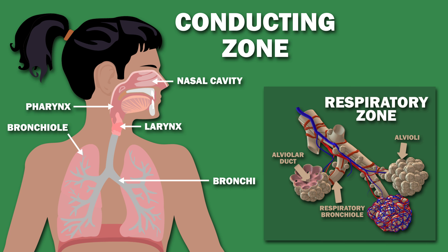The respiratory zone is found deep in the lungs and is involved in gas exchange. This includes the respiratory bronchioles, alveolar ducts, and alveoli, which are air sacs 100 to 300 micrometers wide that allow gas exchange.